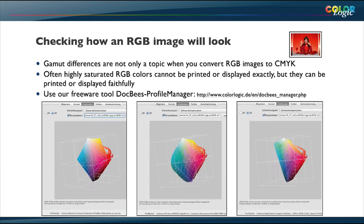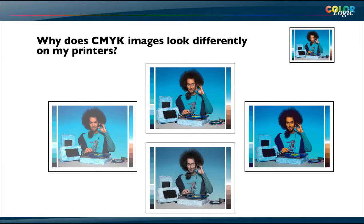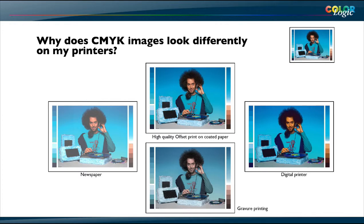On the CMYK part it gets more complex. If I have a CMYK file and print it on different kinds of printers — offset, newspaper, digital — the output is very diverse, completely different colors. The high-quality offset print on coated paper might be correct, but printing on gravure without converting the CMYK values gives a very pale result. On newspaper, the hair has no detail. On a digital printer, completely over-saturated colors. Very often people forget that a CMYK to CMYK conversion is necessary for the final output device.